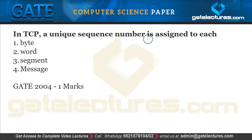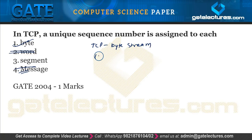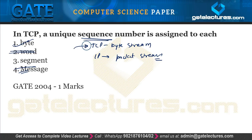Next question: in TCP, a unique sequence number is assigned to each byte. TCP is a byte-stream protocol, meaning we count every byte. IP, on the other hand, is a packet-stream protocol where we count every packet. So in TCP the sequence number is given to every byte, while in IP it is given to every packet. The correct answer is option 1.